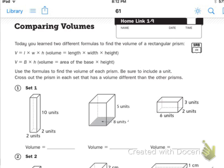Today you learned two different formulas to find the volume of rectangular prisms. Before, we counted all of the squares, you counted the cubes inside, you counted the first layer and then how many went up. But today we learned that volume equals length times width times height, or volume equals area of base times height. Use the formulas to find the volume of each prism. Be sure to include a unit. Cross out the prism in each set that has a volume different than the other prisms.